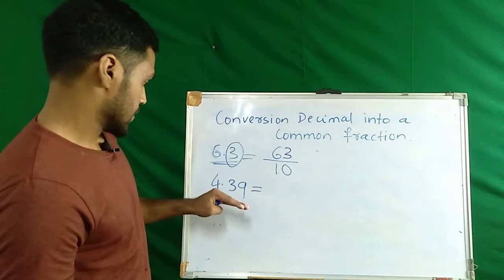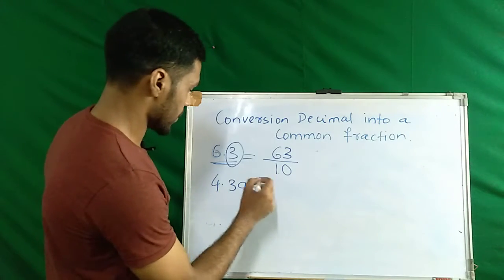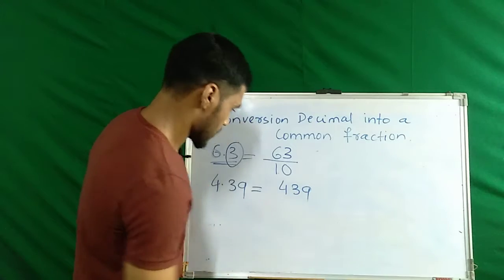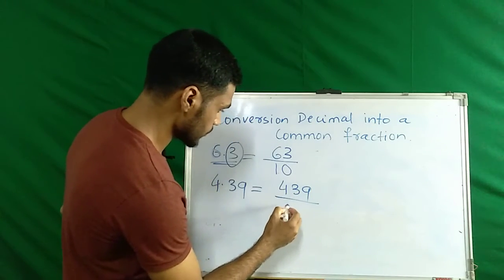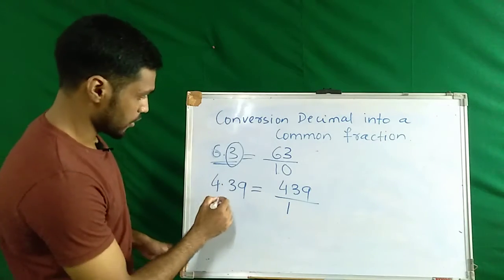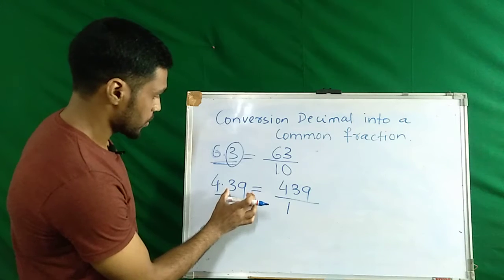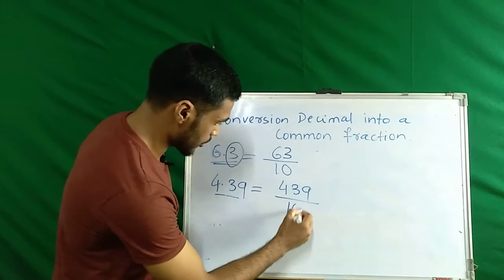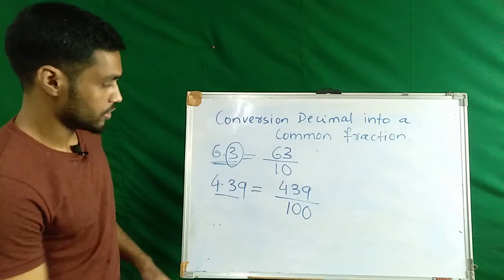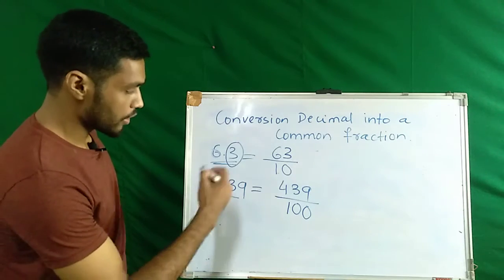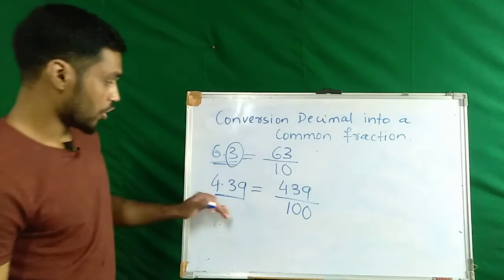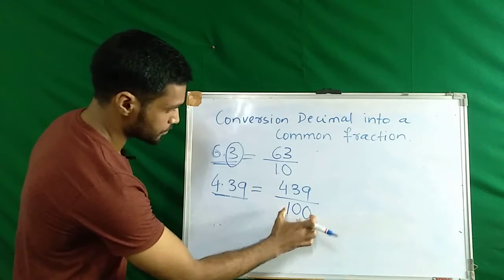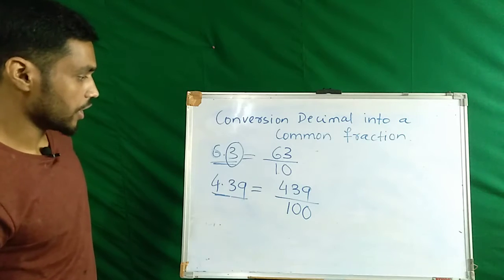Let us convert the given decimal. To convert the given decimal, we have to write this decimal without the decimal point. Then write 1, and look at the decimal here — we have only 2 decimal places. So we have to write 2 zeros on the right side of the 1.